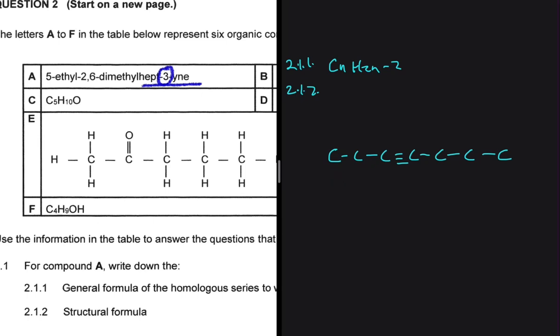So now we just need to add the branches. So on the fifth carbon, we have an ethyl - a branch with two carbons. So we start counting from the side that is closest to the functional group. We're going to have 1, 2, 3, 4, 5. So on this carbon here, we're supposed to have a branch with two carbons. Let's just leave it like that for the time being.